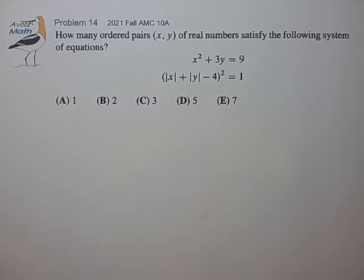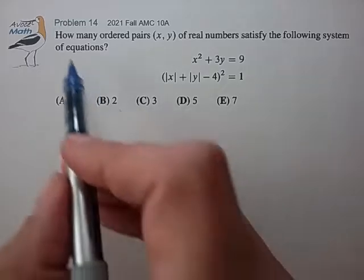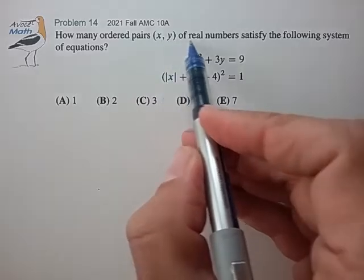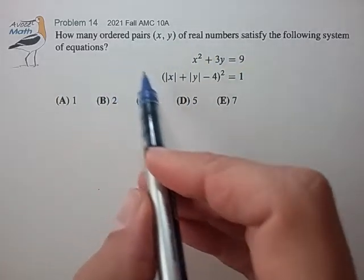Hi, this is problem 14 from the 2021 AMC 10A. How many ordered pairs (x, y) of real numbers satisfy the following system of equations shown?